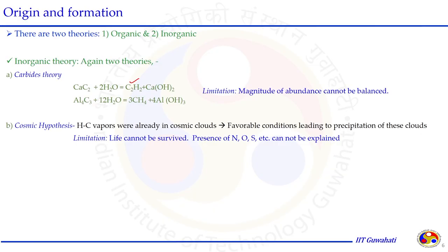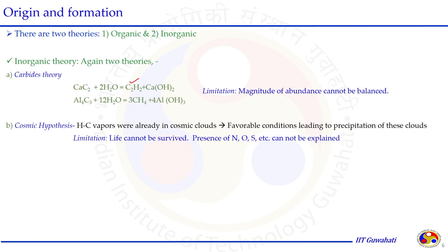The carbide reactions are limited — they require water and sufficient metal carbide to form that amount of hydrocarbon. The cosmic hypothesis states that hydrogen and carbon vapours are already present in cosmic clouds, and favorable conditions caused the formation of hydrocarbons. But this theory also has limitations: if such clouds were present, life could not have survived on this planet, and the presence of heteroatoms like nitrogen, oxygen and sulfur cannot be explained.